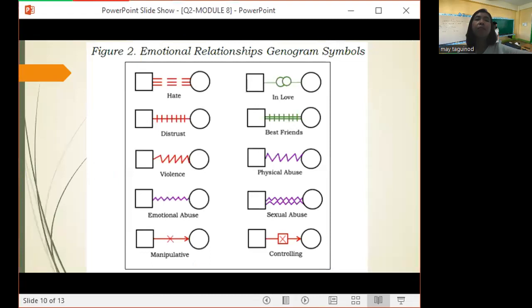Even in emotional aspects, we also have different genogram symbols. For hate, there is a square and a circle, then there are three connecting lines behind the center. Then for distrust, we have a square and a circle as well, then one line and vertical lines at the center. Then for violence, we have zigzag lines.